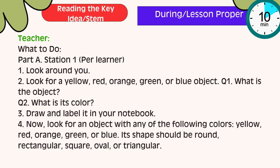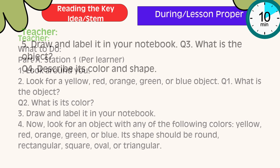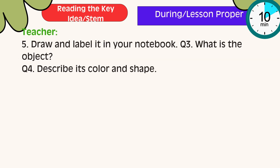Next, look for an object with any of the following colors: yellow, red, orange, green, or blue. Each shape should be round, rectangular, square, oval, or triangular. Draw and label it in your notebook. Question 3: What is the object? Question 4: Describe its color and shape.